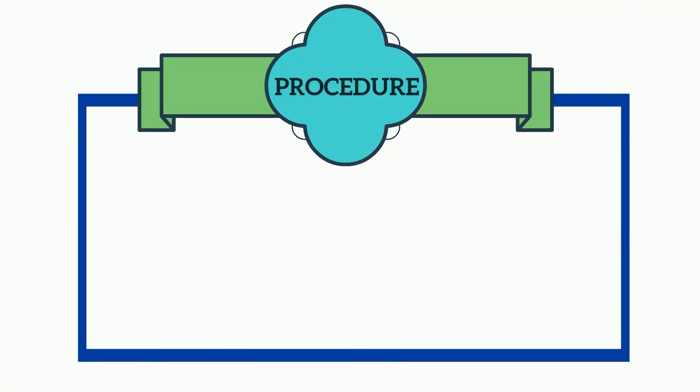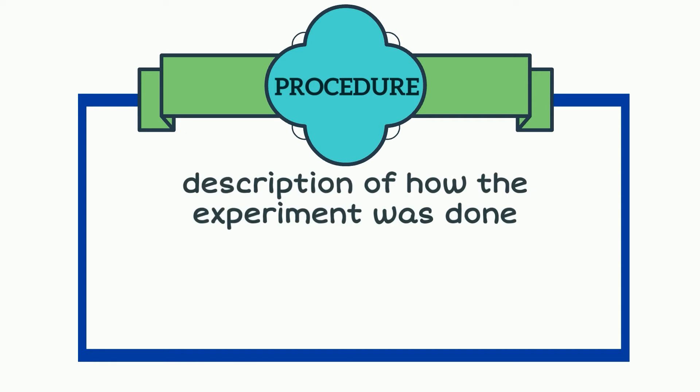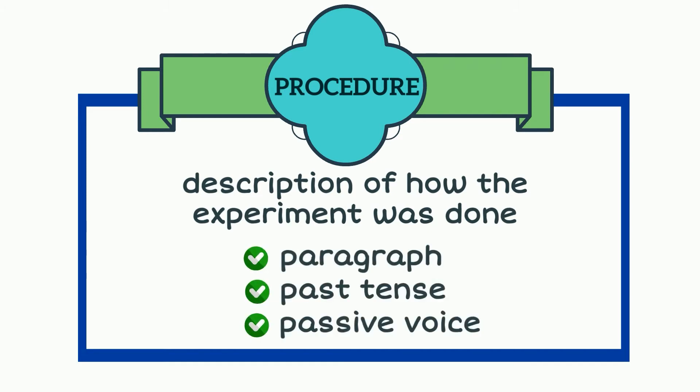Procedure is a description of how the experiment was done. In a laboratory manual, we often see procedures written in a step-by-step instruction. But in a research paper, this is actually written in paragraph form, past tense, passive voice, and third-person perspective.